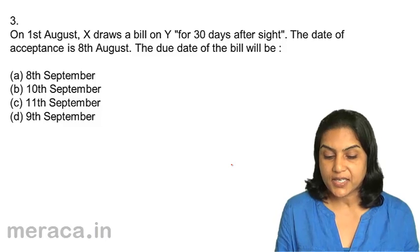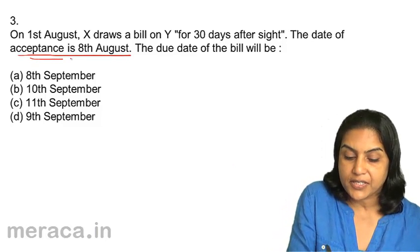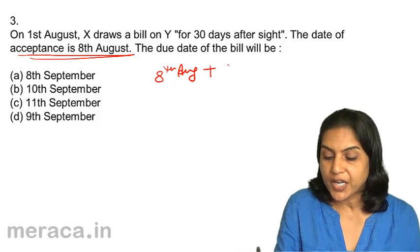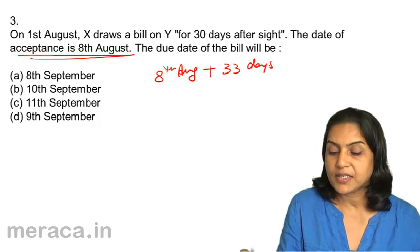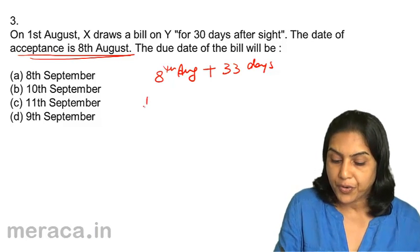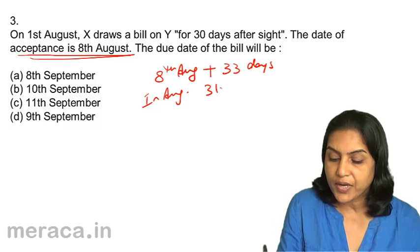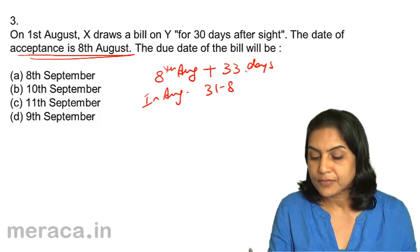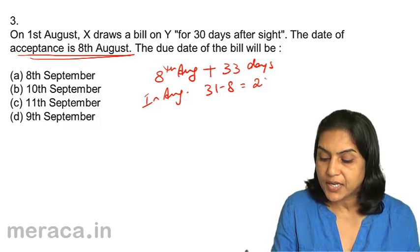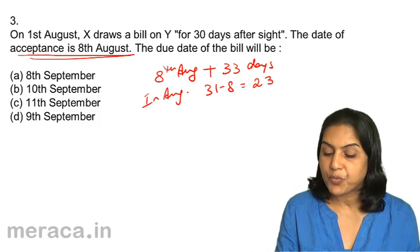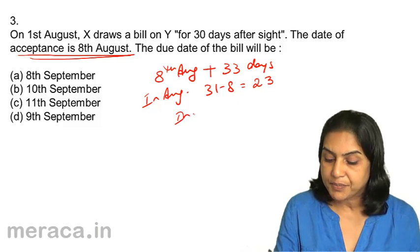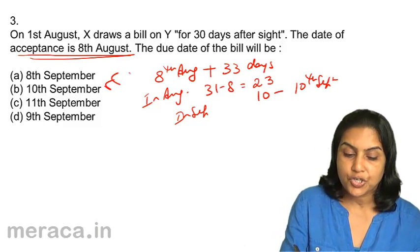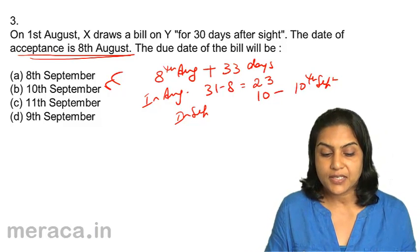30 days after sight means after the date of acceptance. Therefore, it's 8th August plus 30 days plus 3 days of grace, so 8th August plus 33 days. In August we get 31 minus 8 = 23 days, but we want another 10 days. Therefore, 10 days in September gives 10th September. The right answer is 3B, 10th September.